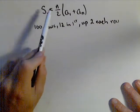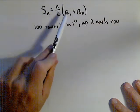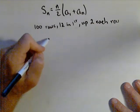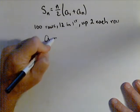Now to finish this, I know the number of rows, I know n and I know the first term, but I need a_100. To do that, I'm going to need my general term.